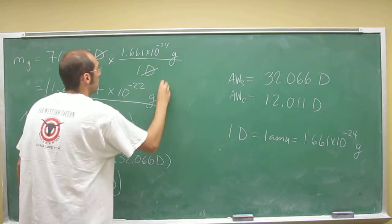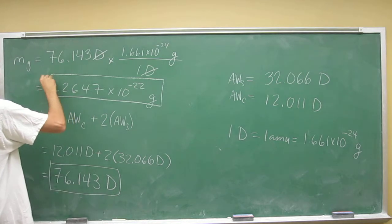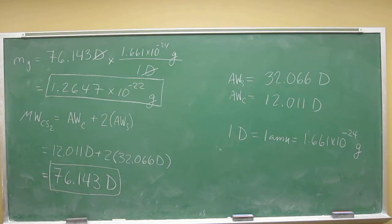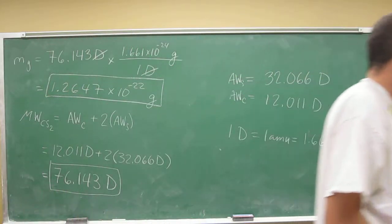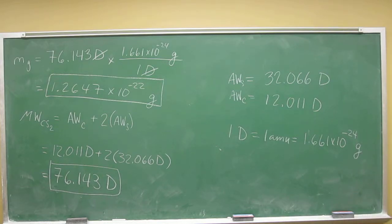So that's how much one molecule of carbon disulfide weighs in grams. As you would imagine, smaller than one gram because it's very tiny. So make sure you know how to do that. I think that's your first conversion factor for your unit two.